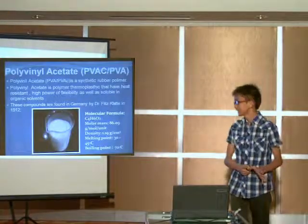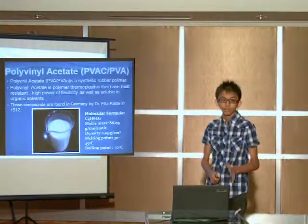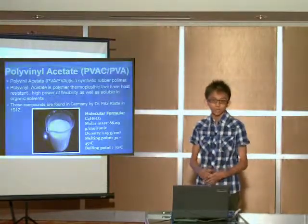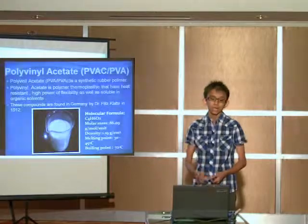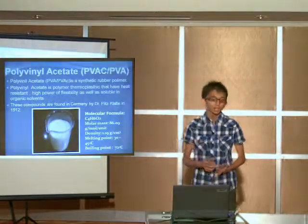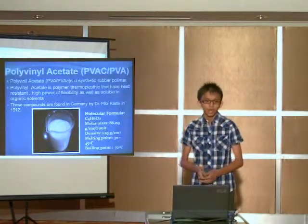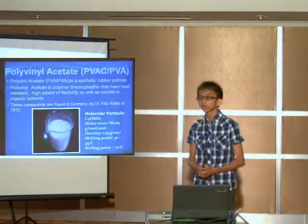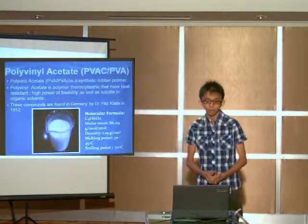Polyvinyl acetate is a synthetic rubber polymer. Polyvinyl acetate is a thermoplastic polymer that has heat resistance, high power of flexibility, as well as being soluble in organic solvent. Polyvinyl acetate was found in Germany by Dr. Friedklitz in 1912.